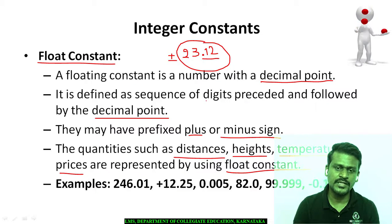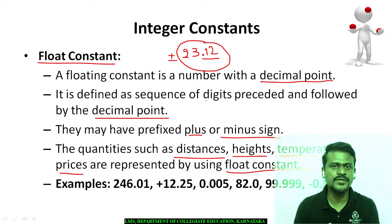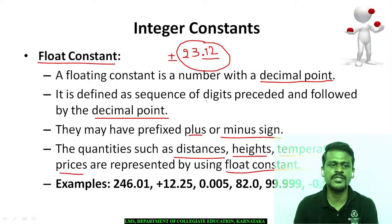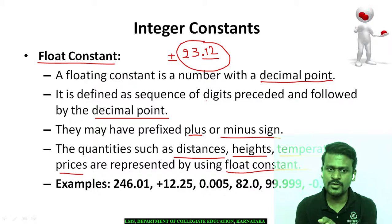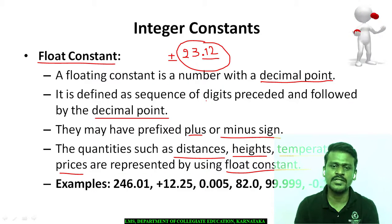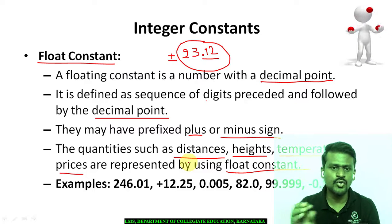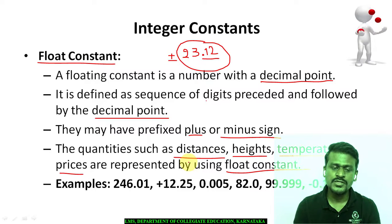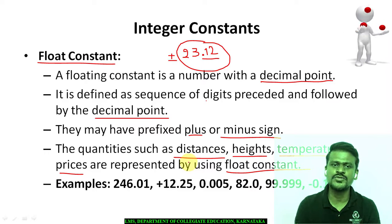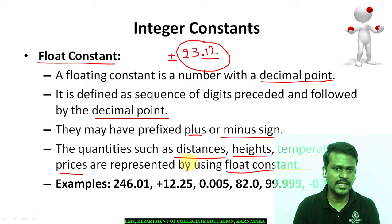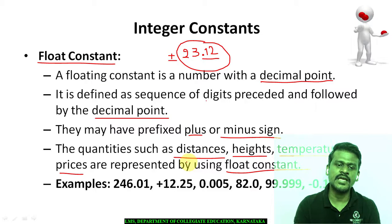Float constant can be used to calculate distance, height, temperature and prices. These floating point values will produce a decimal point result — for example 0.12, 0.13, 0.34. This is the decimal part, and that part represents a float constant. For that reason, we can calculate these quantities using the float constant.